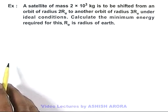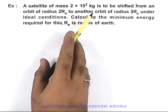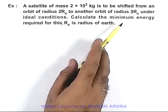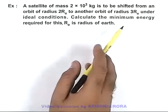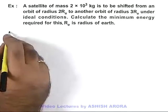This example says that a satellite of mass 2×10³ kg is to be shifted from an orbit of radius 2Rₑ to another orbit of radius 3Rₑ under ideal conditions, and we are required to calculate the minimum energy required for this. It is also given that Rₑ is the radius of earth.